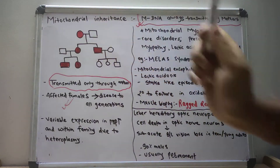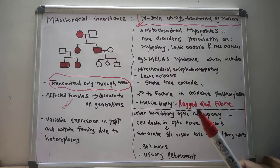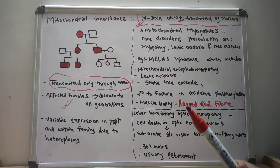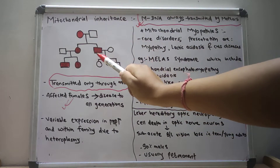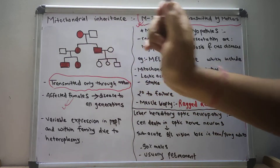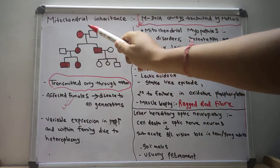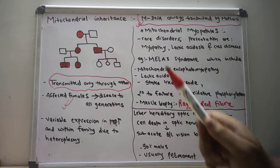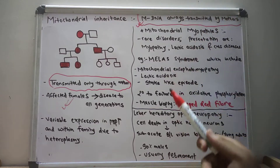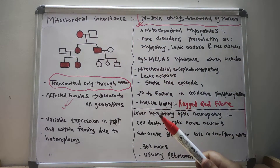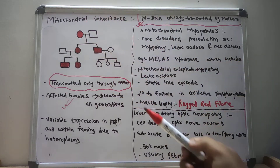In the pedigree chart, there is an affected female and the male is not affected, but after their marriage the child is one son and one daughter, and both of them are affected. This is because the mother always transfers the mitochondrial DNA to her progeny, so both the son and daughter are affected.